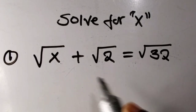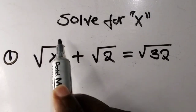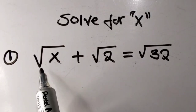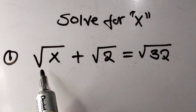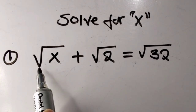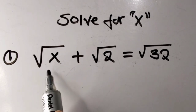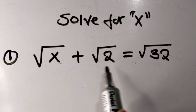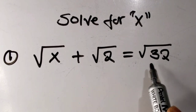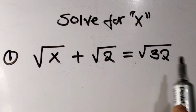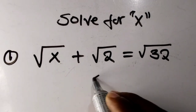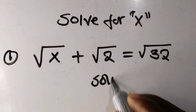Hello guys, welcome back. Today we are looking at how to solve for x with this question. We have the square root of x plus square root of 2, which equals square root of 32. Let's get started.